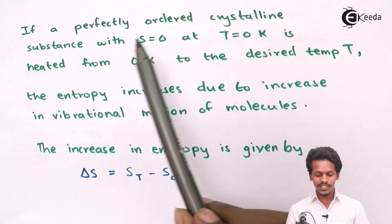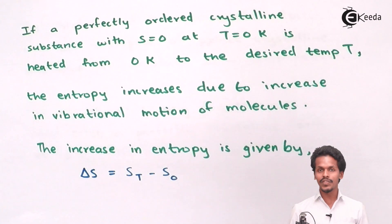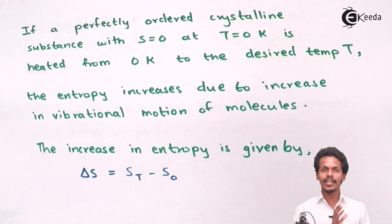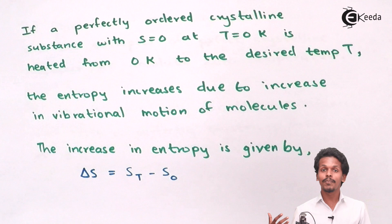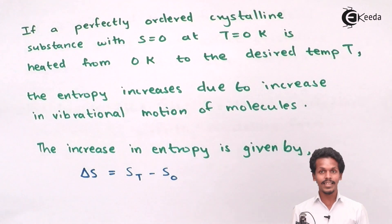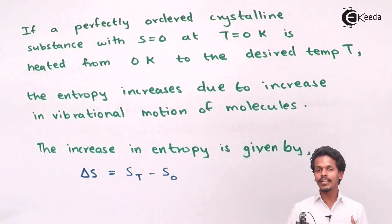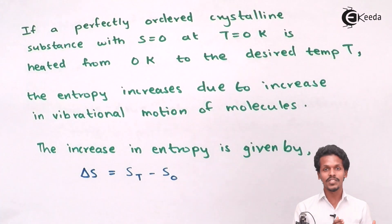If a perfectly ordered crystalline substance with entropy equal to zero at zero Kelvin is heated from zero Kelvin to a desired temperature — say one Kelvin, two Kelvin — we are increasing the temperature above zero Kelvin. At zero Kelvin the entropy is zero, but as we increase the temperature there is a chance of increasing the disorder of that substance. The entropy increases due to increased vibrational motions of the molecules, and since there is movement and disorder, the entropy will be greater than zero.